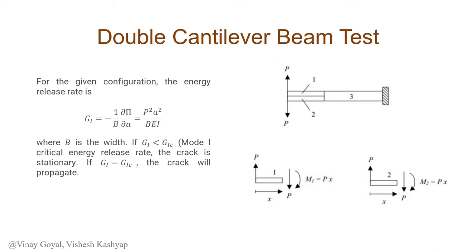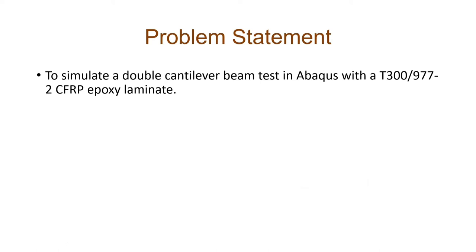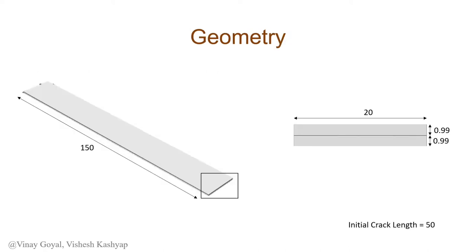Now, if the fracture energy of the current process is less than the critical fracture energy of the material, the crack will not propagate, it will be stationary. Whereas if it equals the critical fracture energy, the crack will begin to propagate. What are we going to do today? We are going to use Abacus to simulate a double cantilever beam test with a CFRP epoxy laminate, CFRP being carbon fiber reinforced polymer.